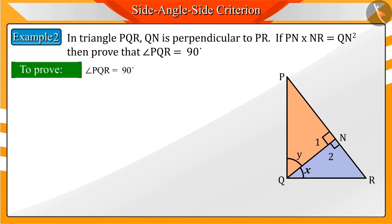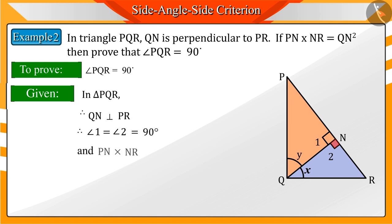We need to prove that angle PQR is equal to 90 degrees. We know that QN is perpendicular to PR. Hence, angles 1 and 2 are right angles.